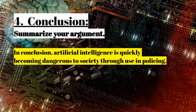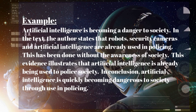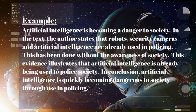4. Conclusion — Summarize your argument. In conclusion, artificial intelligence is quickly becoming dangerous to society through use in policing. Put it all together in a paragraph. Example: Artificial intelligence is becoming a danger to society. In the text, the author states that robots, security cameras, and artificial intelligence are already used in policing. This has been done without the awareness of society. This evidence illustrates that artificial intelligence is already being used to police society. In conclusion, artificial intelligence is quickly becoming dangerous to society through use in policing.